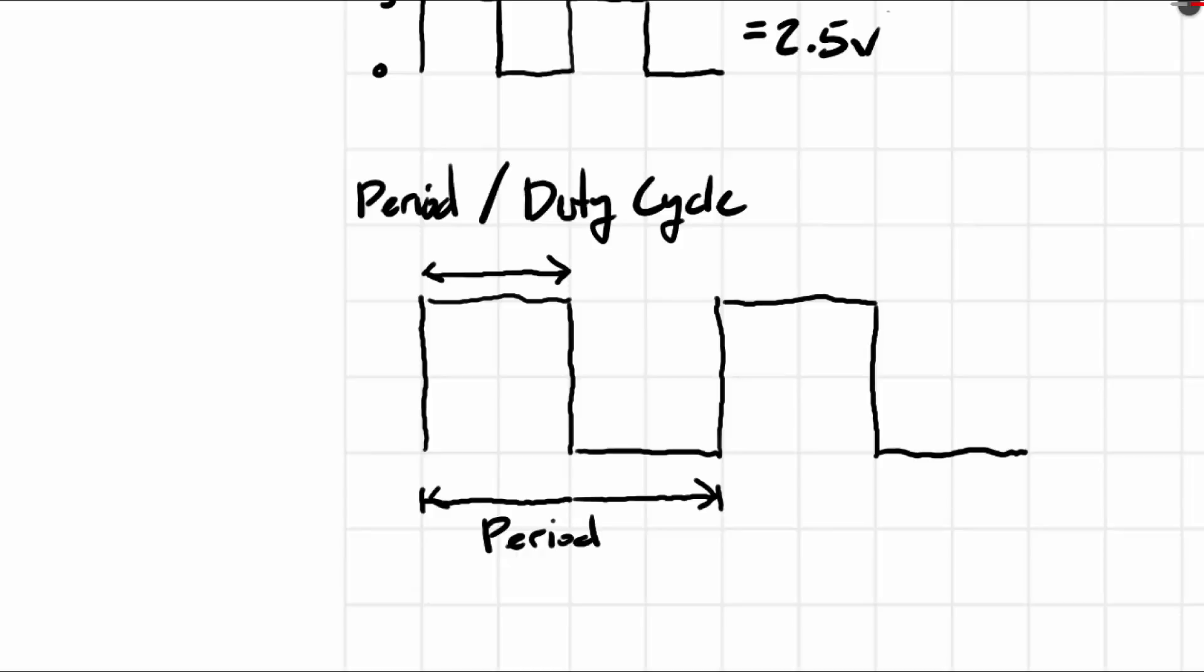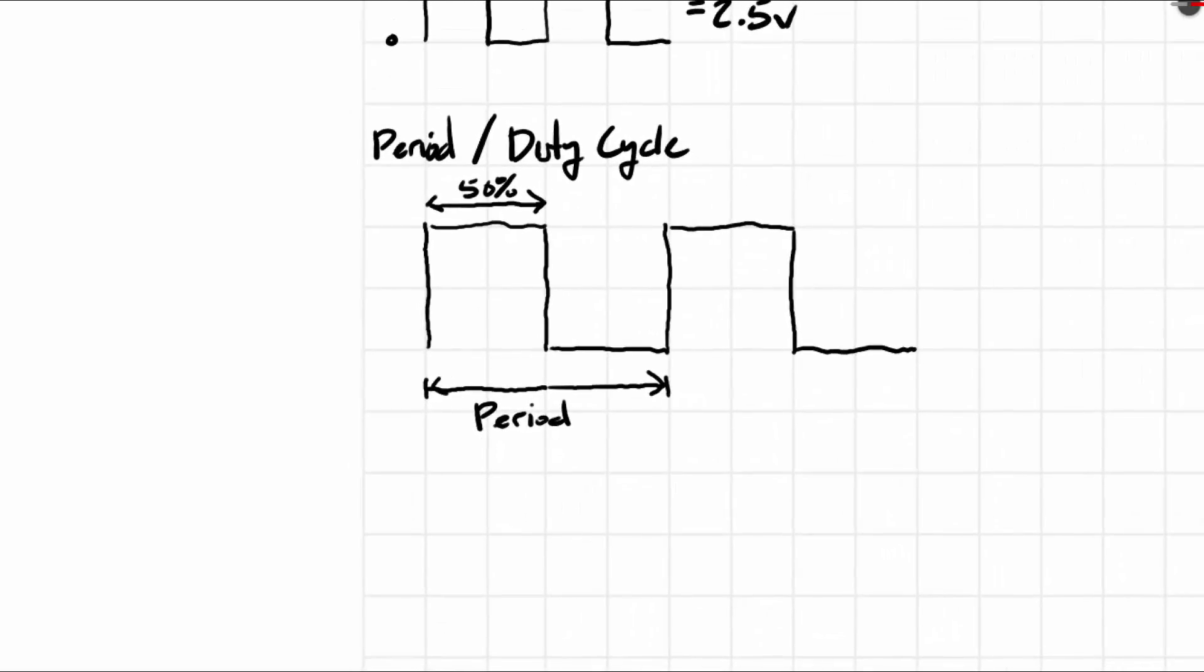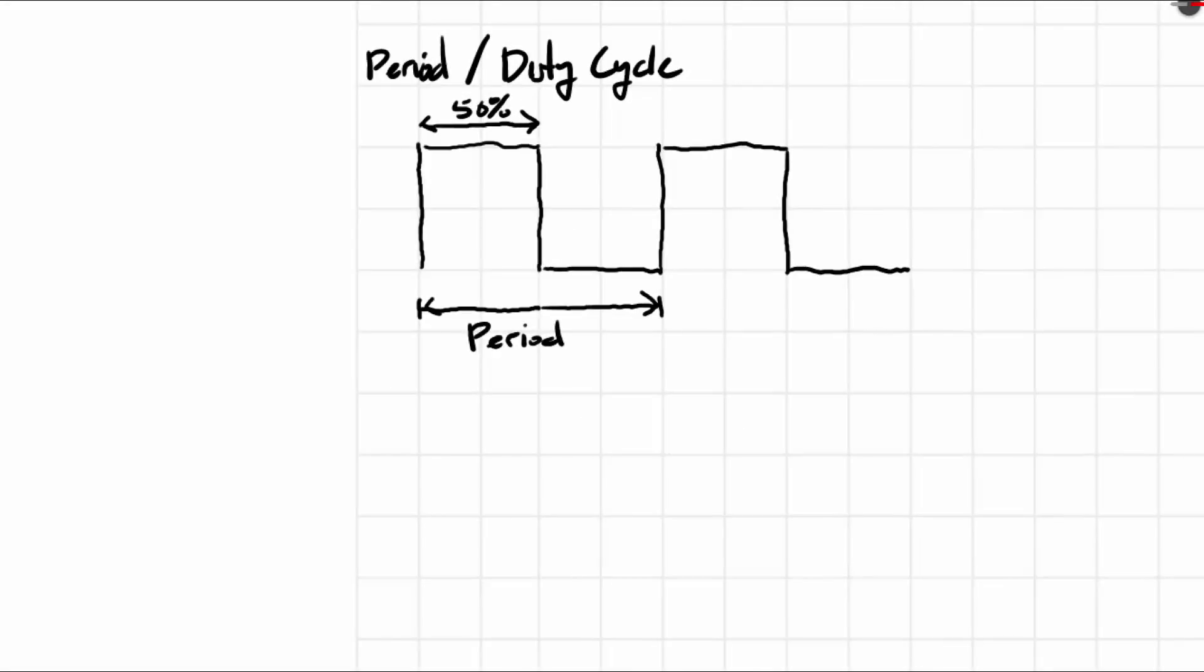The duty cycle is the percentage of the width of the pulse in relation to the period. So this would be a 50% duty cycle.